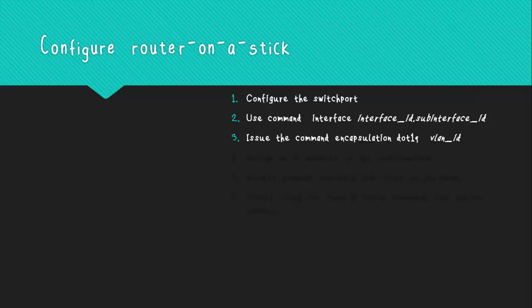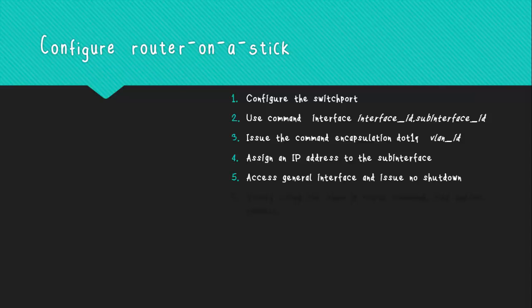The encapsulation command indicates the router to operate within the assigned VLAN. Once the VLAN is assigned, you can assign an IP address to the subinterface using the command 'ip address' followed by the IP address and the subnet mask. After creating all subinterfaces, exit to global configuration mode and enter the main physical interface — in this example, G0/0 — where all the subinterfaces were created. Then issue the 'no shutdown' command so all subinterfaces become active.